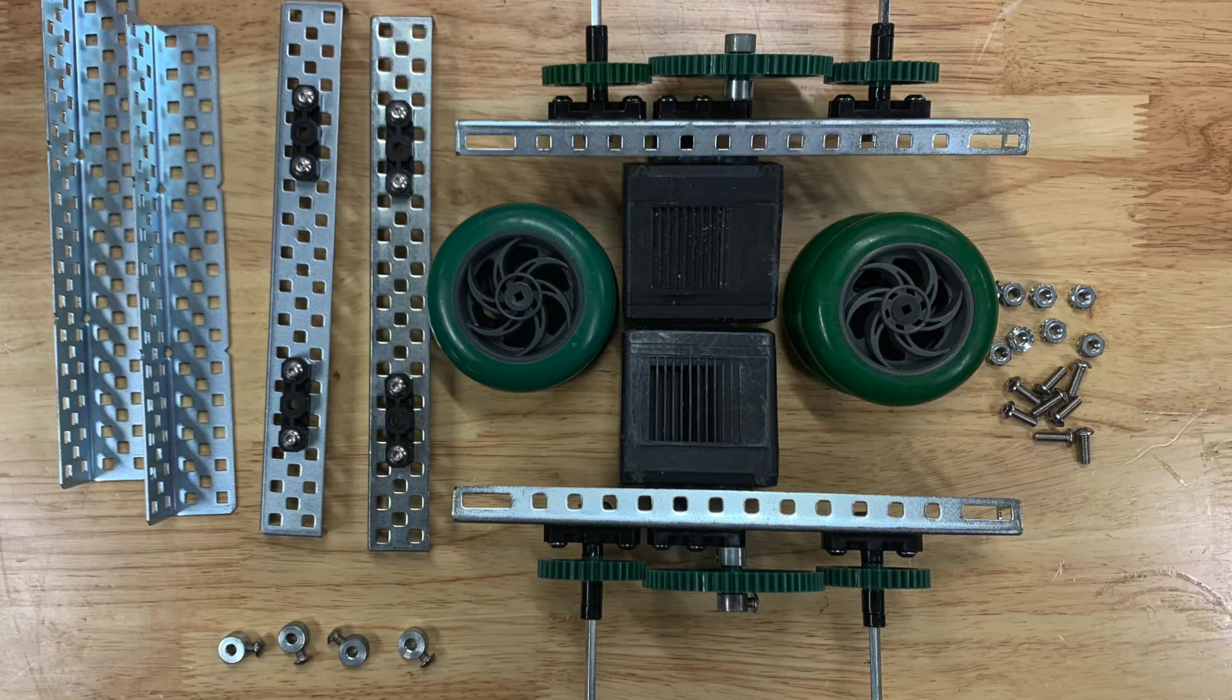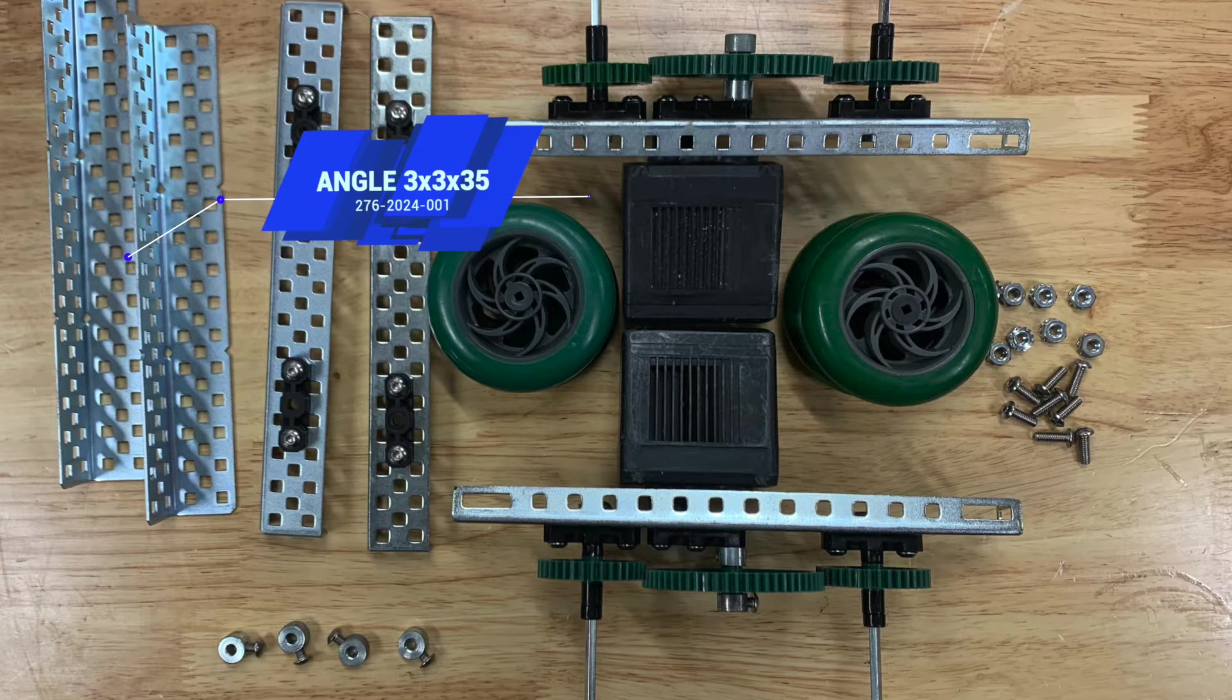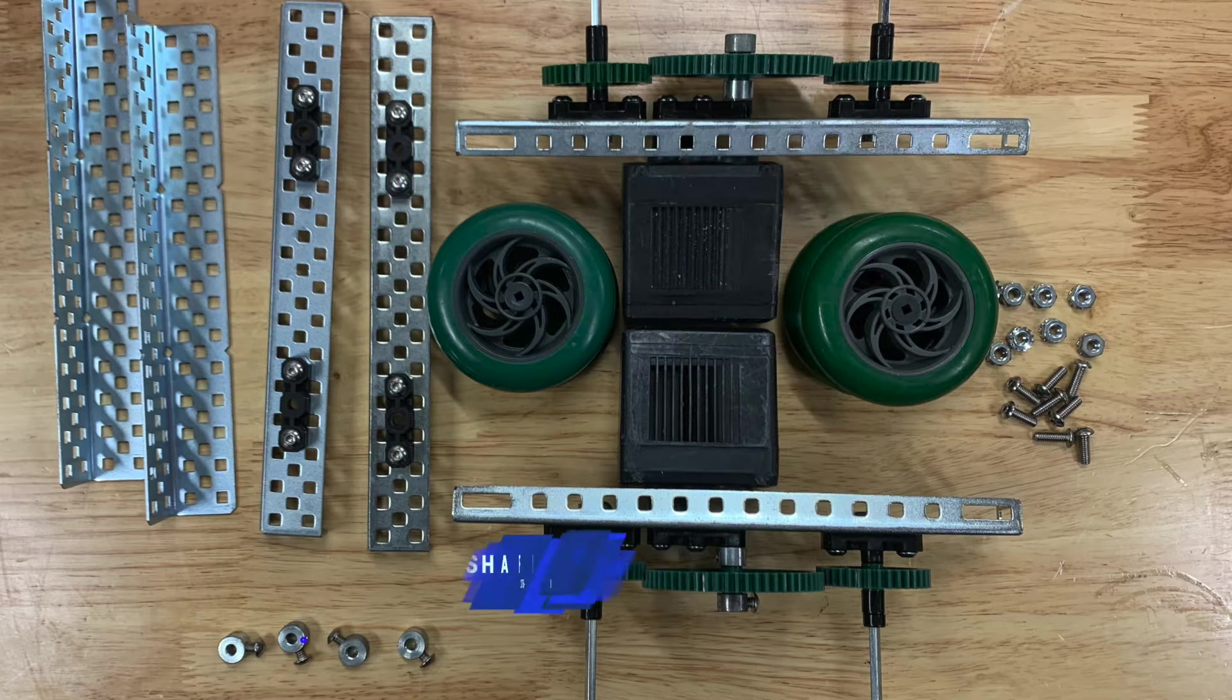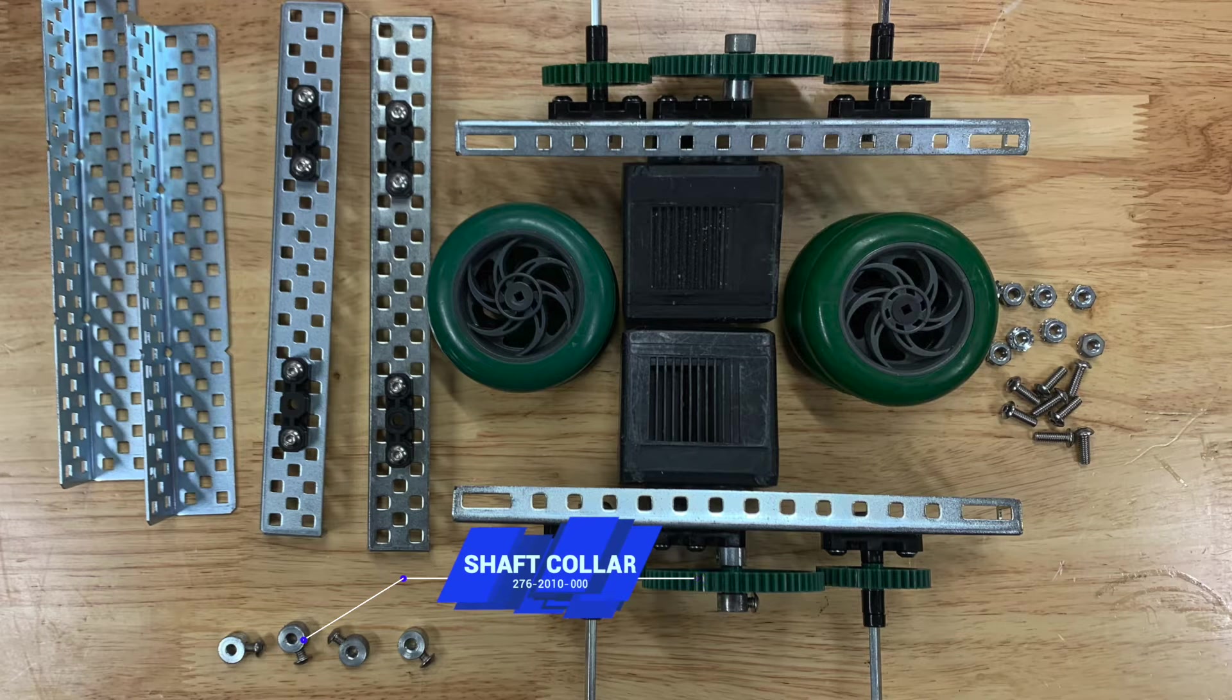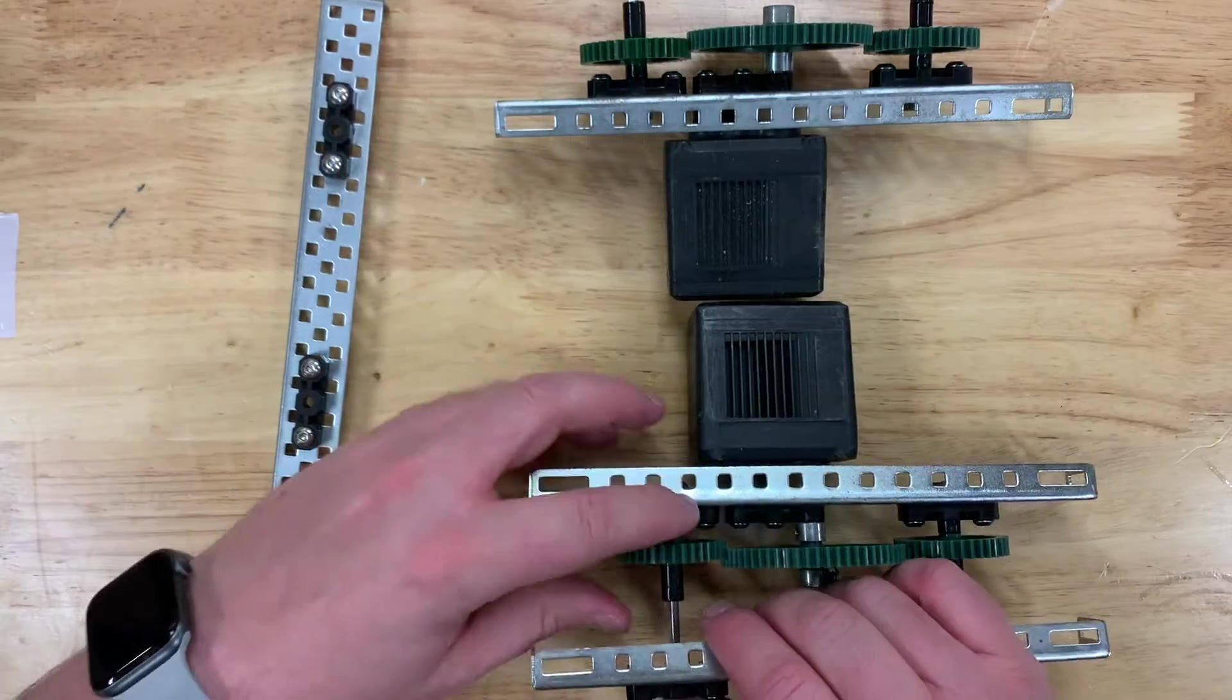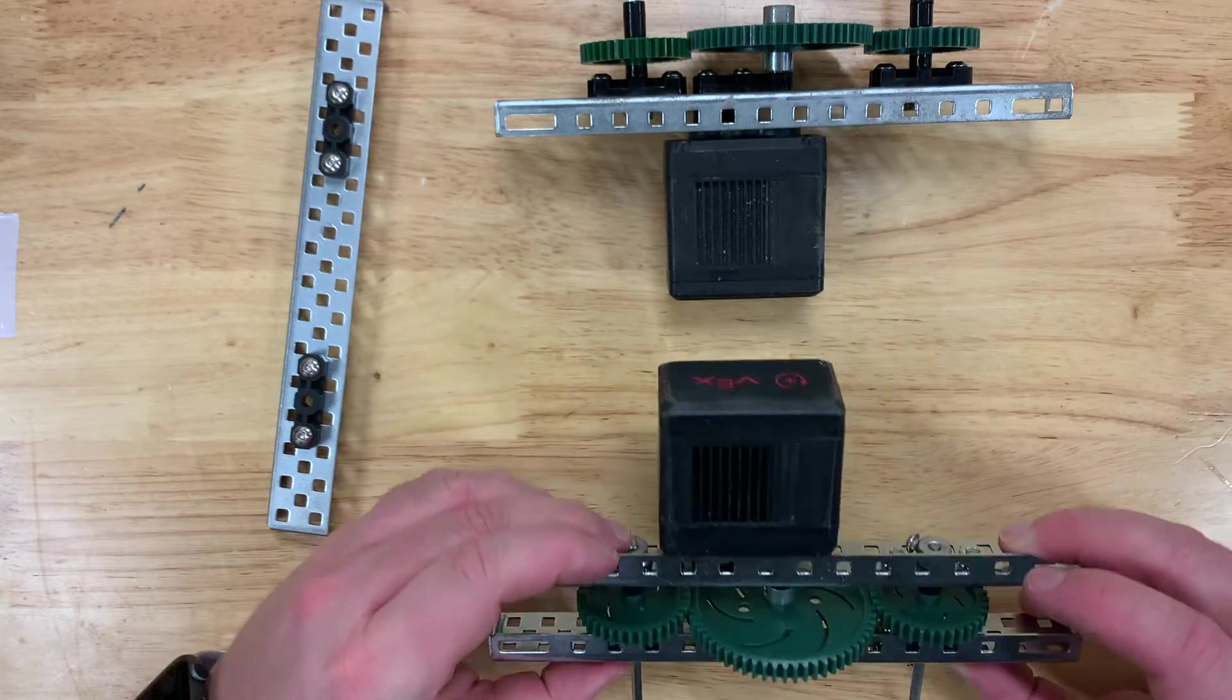So in this final part we're going to put it all together. We're going to need some angles, the chassis rails we created in part one, our shaft collars, and also the 2.75 inch wheels. First of all, we're going to slide on the chassis rails we created in part one to the drivetrain that we created in the last video.